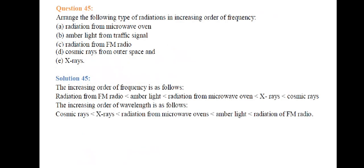Next question: arrange the following types of radiation in increasing order of frequency. The increasing order of frequency is: radiation from FM radio < amber light < radiation from microwave oven < X-rays < cosmic rays. The increasing order of wavelength is the reverse: cosmic rays < X-rays < microwave oven radiation < amber light < FM radio radiation.